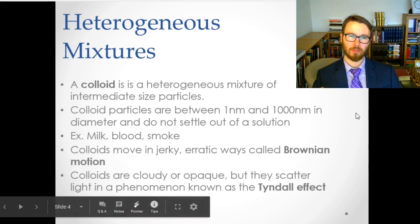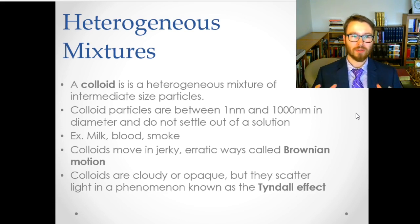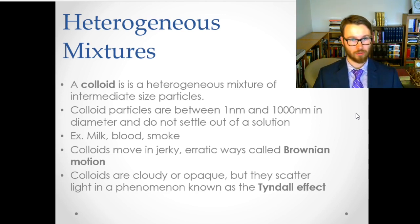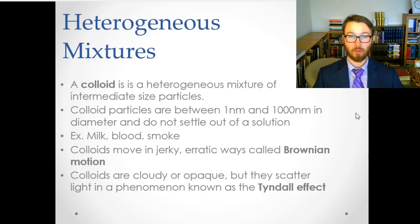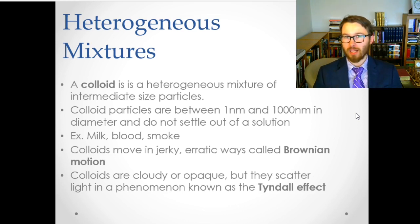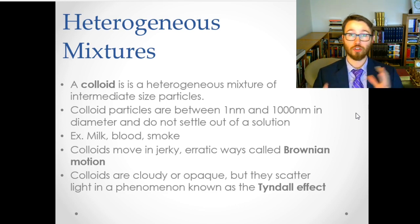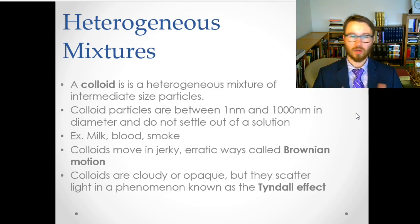An important type of heterogeneous mixture is called a colloid. A colloid is a mixture of intermediate-sized particles — specifically between one nanometer and a thousand nanometers in diameter — that do not settle out of solution. It's heterogeneous and not smoothly blended, but the particles stay suspended and don't come out eventually like sand falls out of water. For example, blood is a colloid, and so is milk, which has solid fats, water, and sugars that don't get blended together but just sit separately.